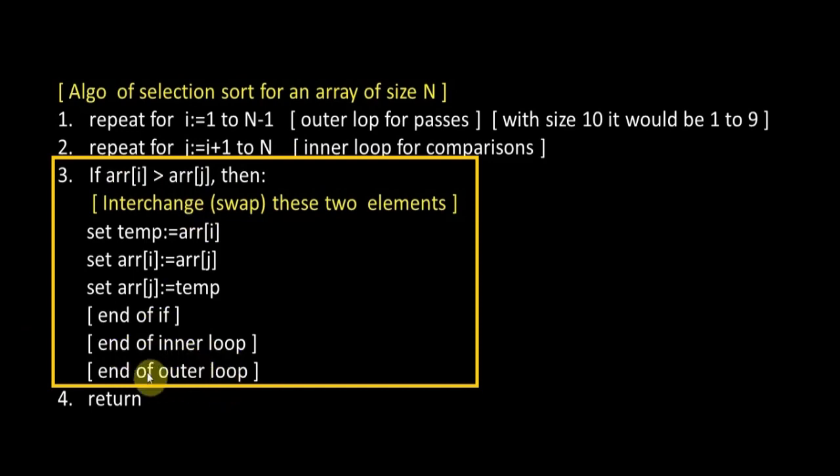The value of i will be incremented by 1: from 1 it will become 2. And what will be the initial value of j in the inner loop? It will become 3. So we will be comparing arr[2] with arr[3], then arr[2] with arr[4], and so on.